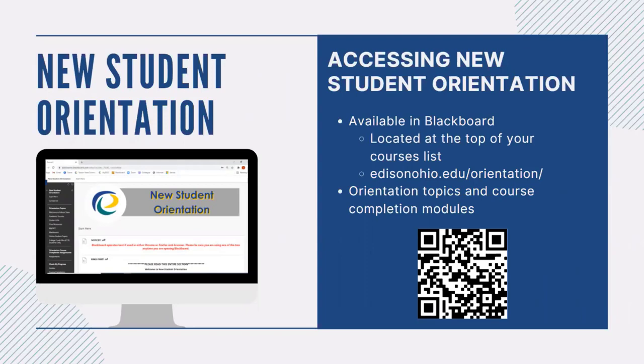The orientation is comprised of two main parts: orientation topics and course completion modules. This online experience allows you the flexibility to complete orientation from anywhere at any time convenient for you. Once you've completed the orientation topics, you will need to complete six course completion assignments to earn your certificate. These assignments demonstrate your ability to perform certain tasks and utilize tools that will prepare you for success at Edison State. New student orientation is also a resource available throughout your time as a student. For access, visit edisonohio.edu/orientation.